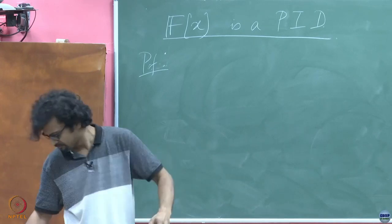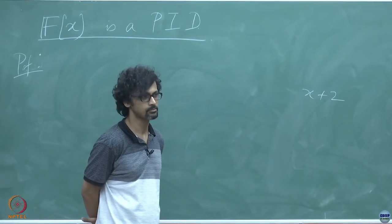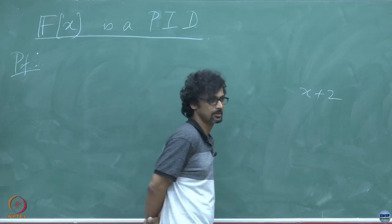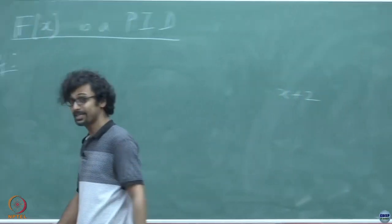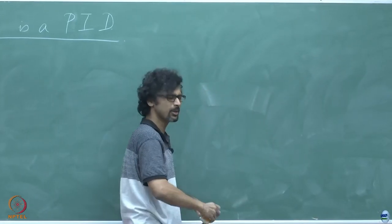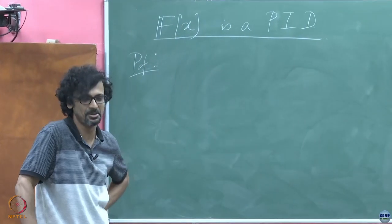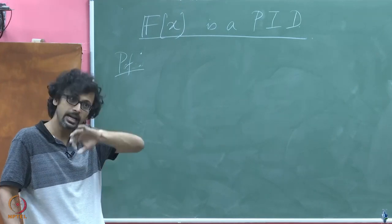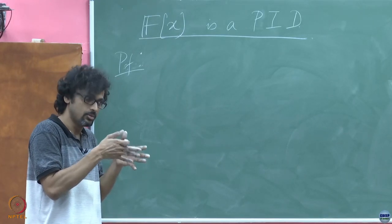Why do you think x is going to be the generator? Let us say I give you x plus 2 — can you generate the ideal from that? What would be your best guess for any ideal? You have to ask me: what is the ideal? Unless I tell you what the ideal is, how can you just say x or x squared or x cubed? I am saying the ideal itself has some structure, and that structure itself helps me in narrowing my search down to the single generating element.